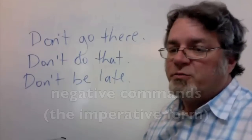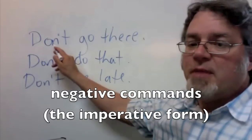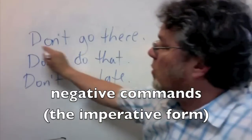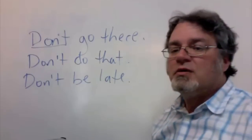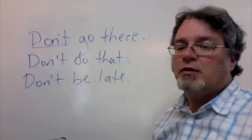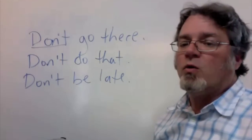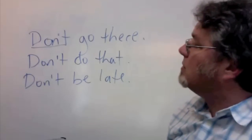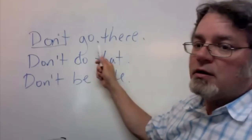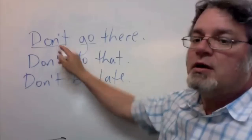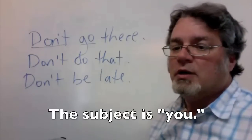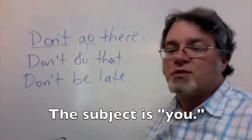The helping verb do is also used in making commands. In this case, you can only use the word don't. This is in the present tense. Use a command when telling somebody to do something or not do something. So, don't go there. The main verb is go. The helping verb is don't. The subject is you. In each of these sentences, the subject is you.